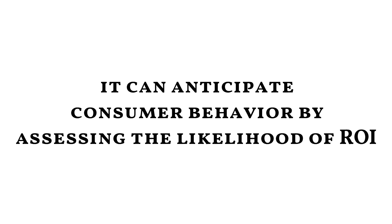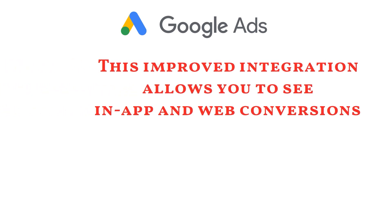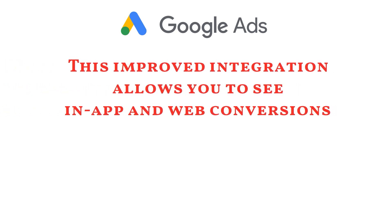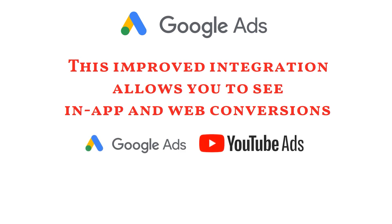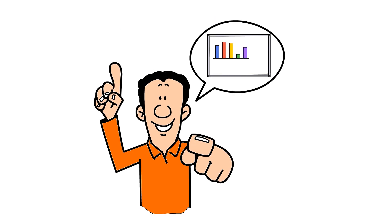Furthermore, GA4 can anticipate consumer behavior by assessing the likelihood of ROI. One of the most significant areas where GA4 has improved is its integration with Google Ads. This improved integration allows you to see in-app and web conversions for Google Ads, YouTube Ads, and other non-Google paid channels such as Facebook and email. As a result, it becomes easier for you to assess the impact of all your marketing channels.